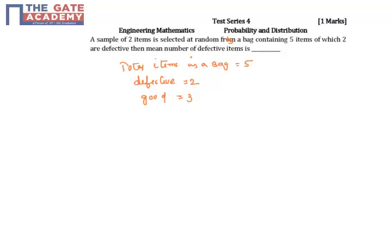What is actually the mean number of defective items? I will consider P as the probability of selecting a defective item.